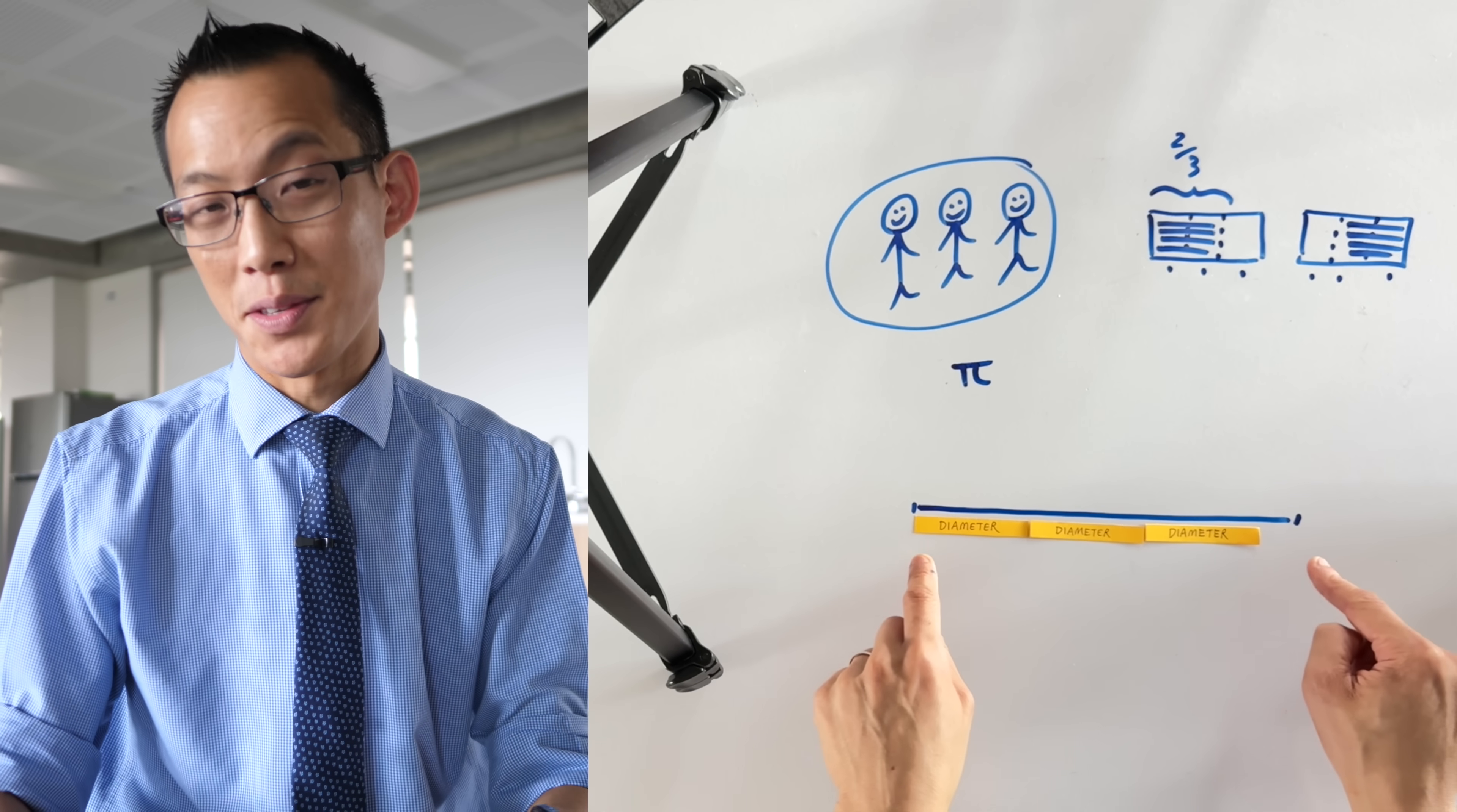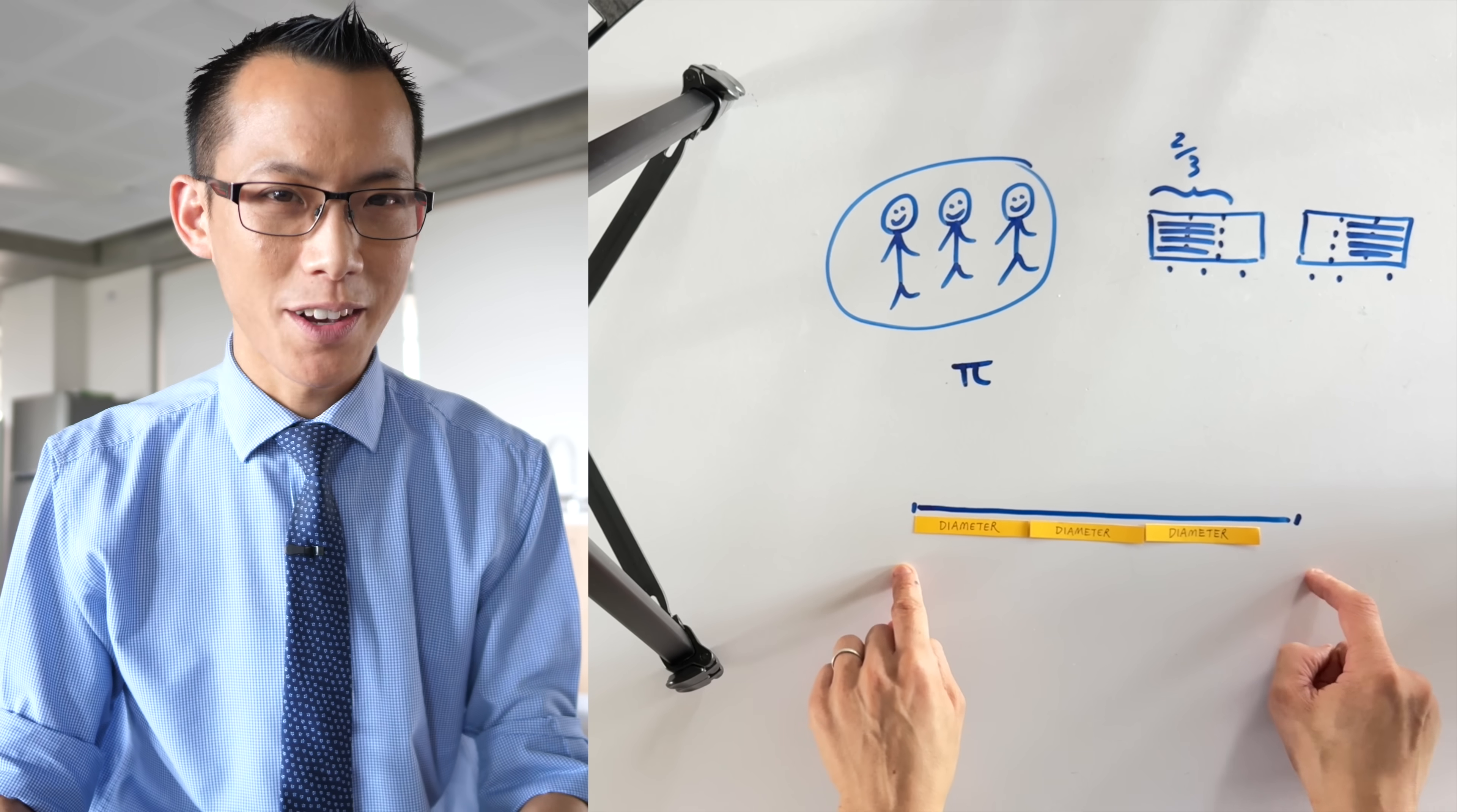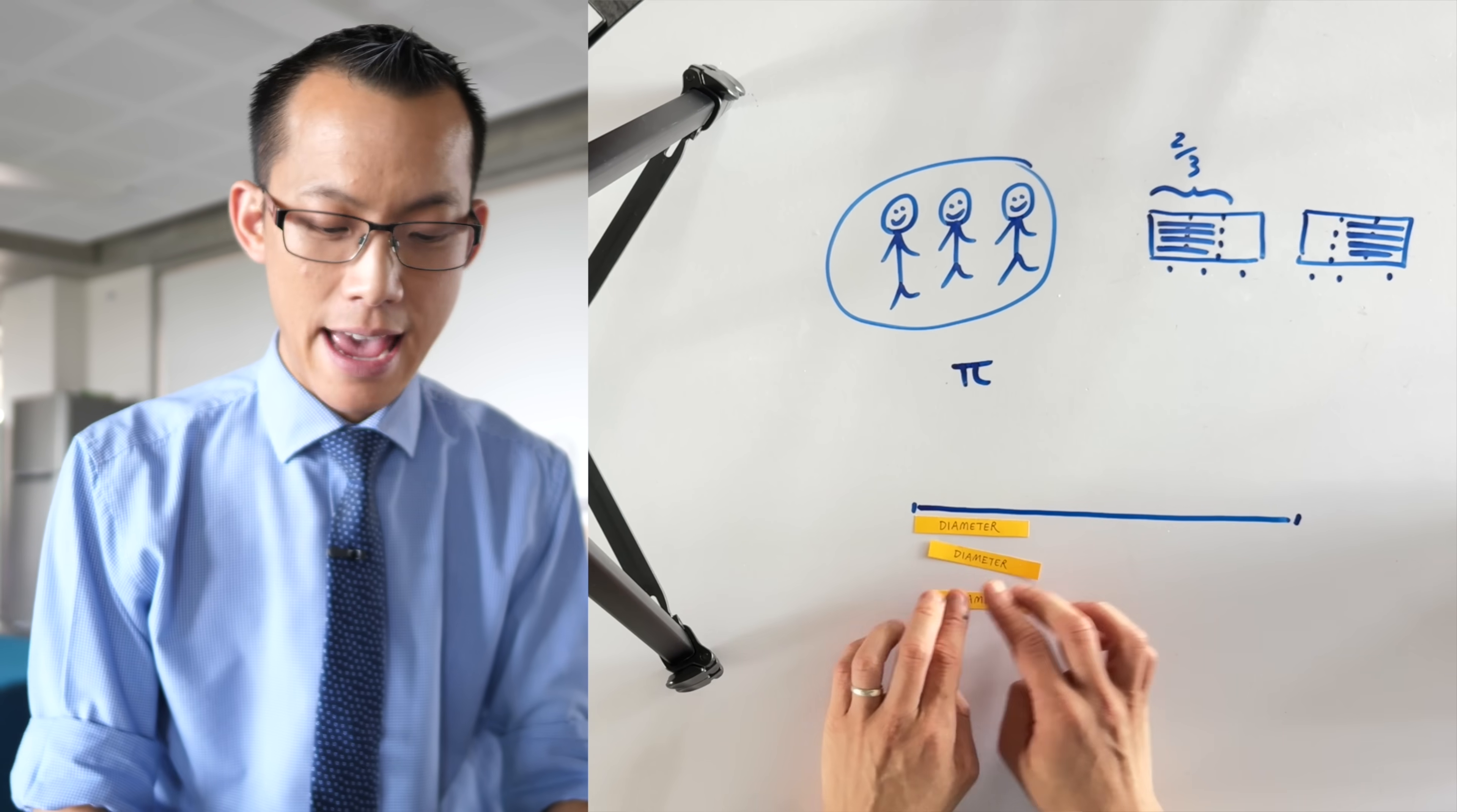So the ratio between the circumference and the diameter, what happens when you divide this longer number, this larger number, by these smaller ones, that's three and a little bit.